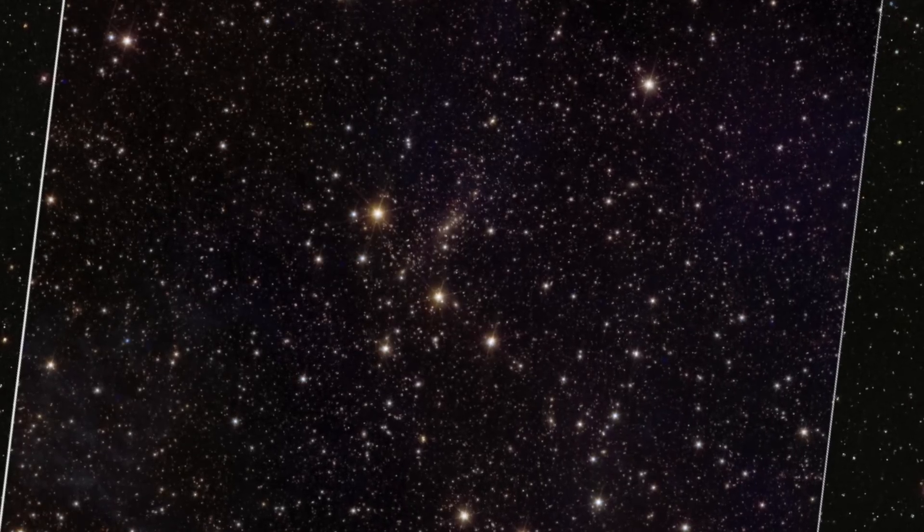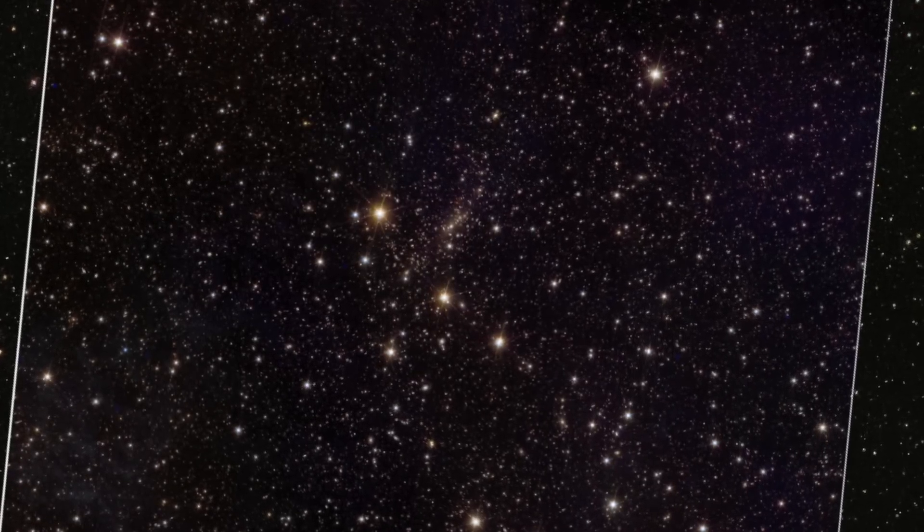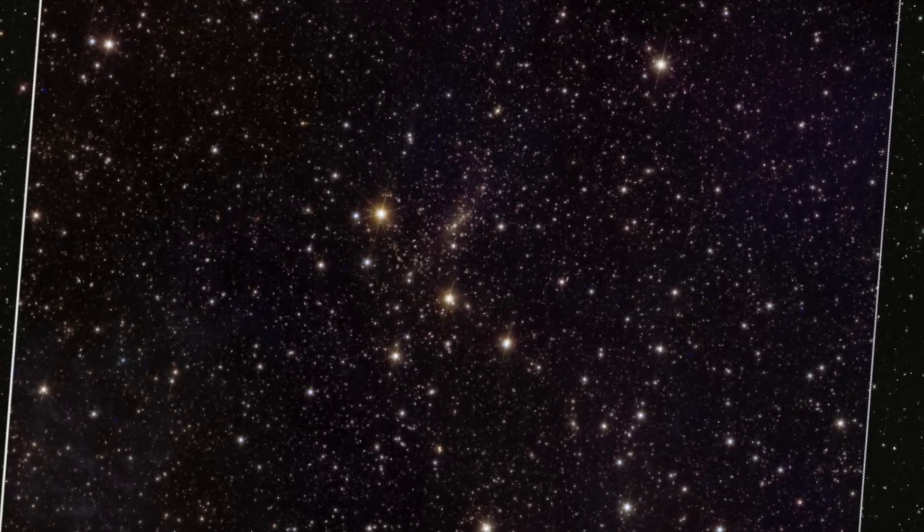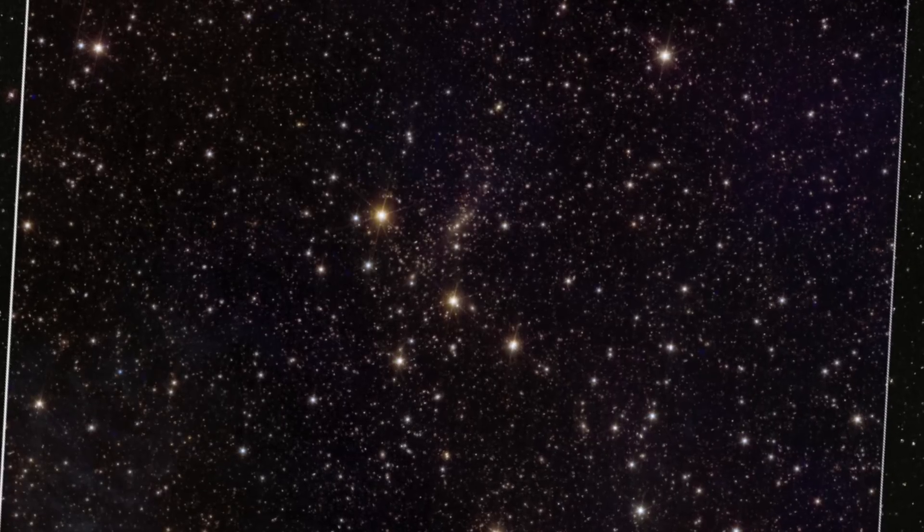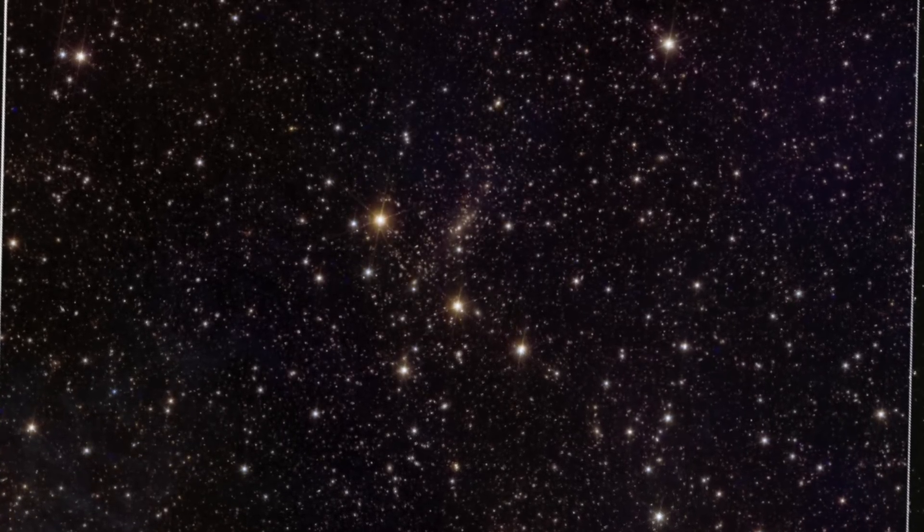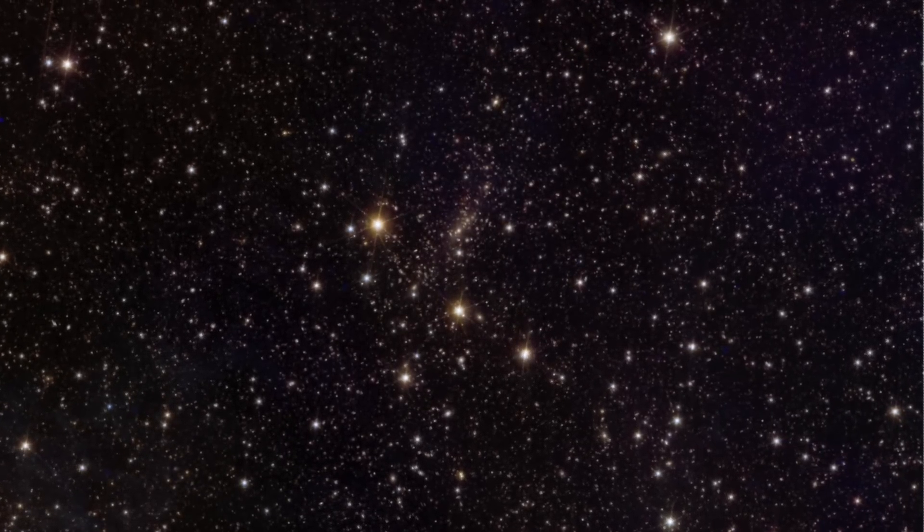Euclid data is four times sharper than those that we can take from ground-based telescopes. The observation reveals many more galaxies, sharper galaxies, and some things we don't see in the ground data at all.